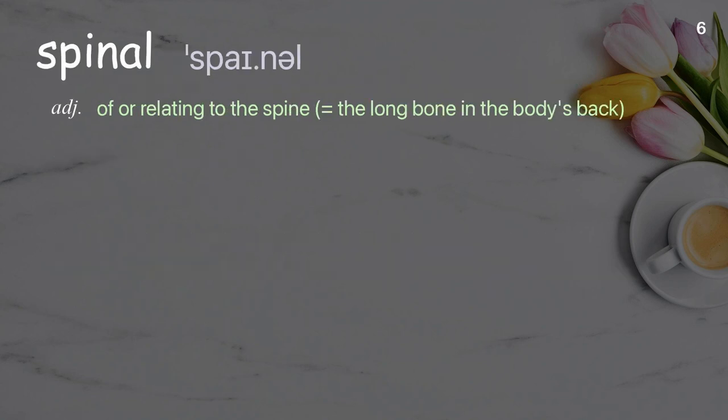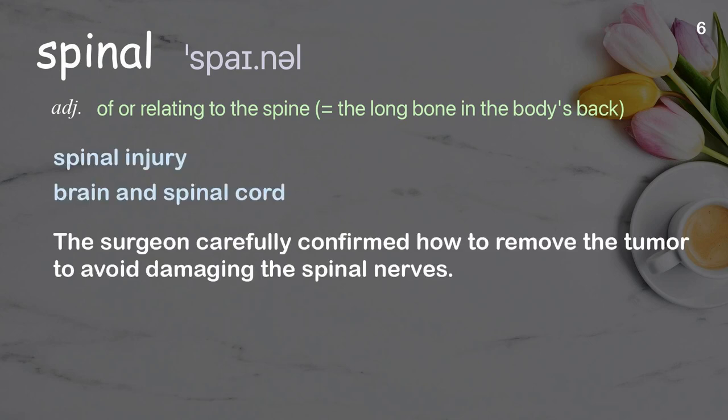Spinal: of or relating to the spine — the long bone in the body's back. Examples: spinal injury, brain and spinal cord. The surgeon carefully confirmed how to remove the tumor to avoid damaging the spinal nerves.